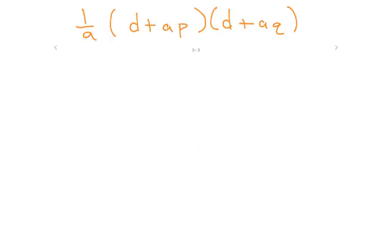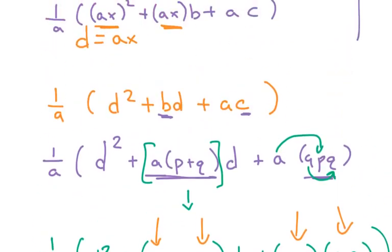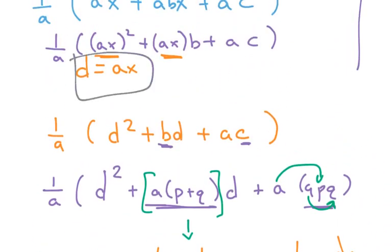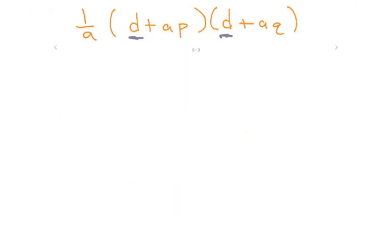So over here, what did we say d was? And this is the brilliant move. We said d was ax. So now, when I substitute ax back in, I'll always have an a that I can factor out. And there's also another a, which is important to have.